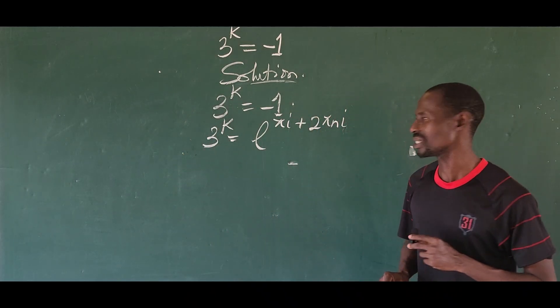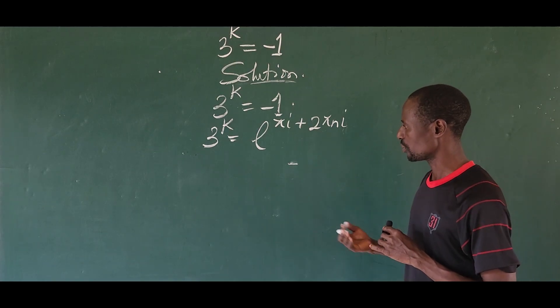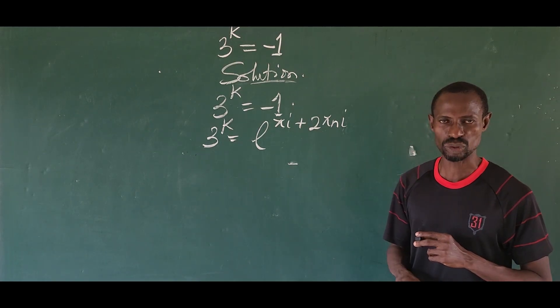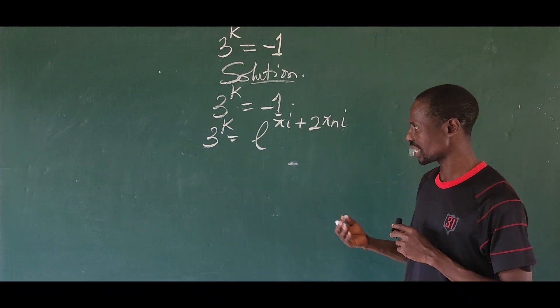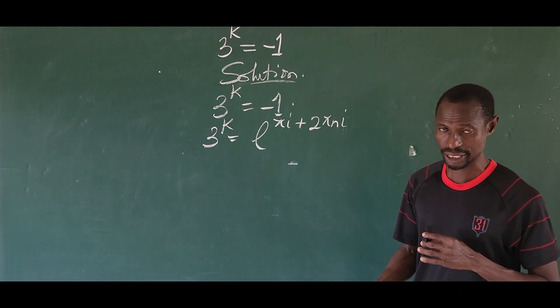Where n is an integer. So if it is so, the next thing we do here is to either we take log to base e of both expressions or we ln both sides of the equation.